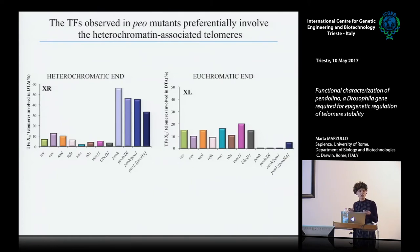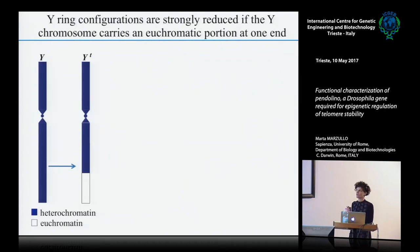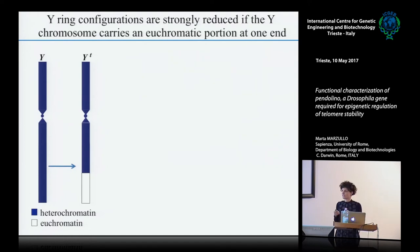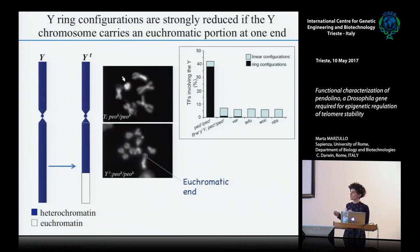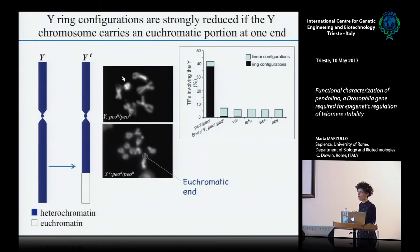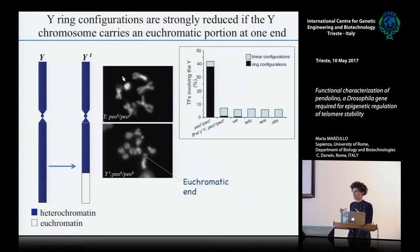We asked if the major involvement in fusions of these chromosomes could be due to their heterochromatic nature. To answer this question, we performed a genetic experiment using a translocated Y chromosome that carries a euchromatic portion at one end. We saw that the presence of this translocated Y in a peo mutant background strongly reduced the involvement of this chromosome in fusions and also reduced the intrachromosomal Y ring fusion, suggesting that the absence of heterochromatin at these telomeres reduces fusions. Therefore, it is the heterochromatic nature of these ends that induces their high fusion frequency.